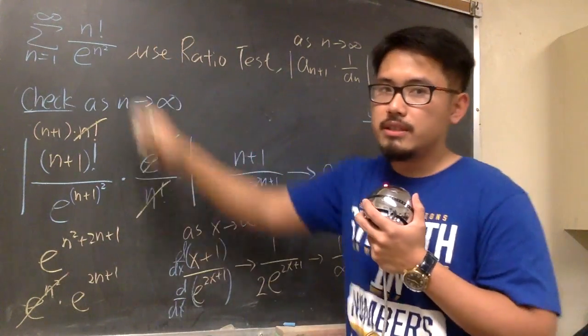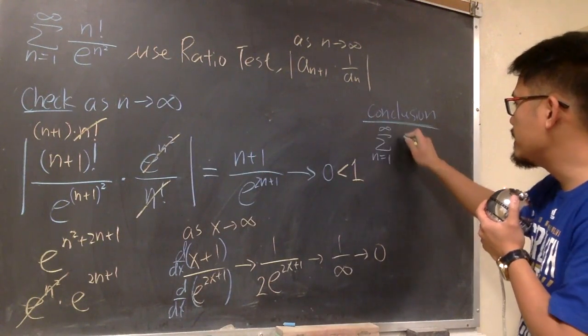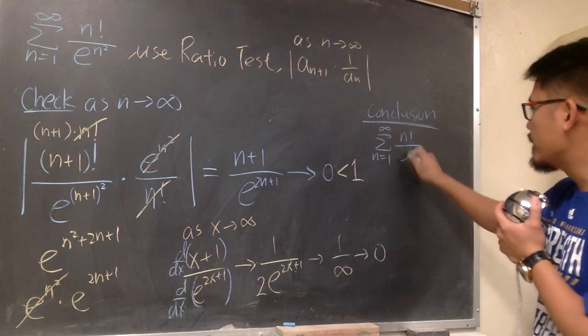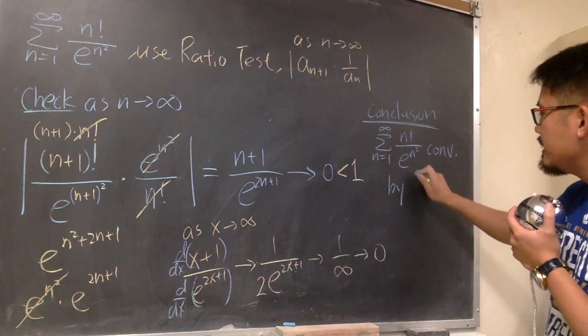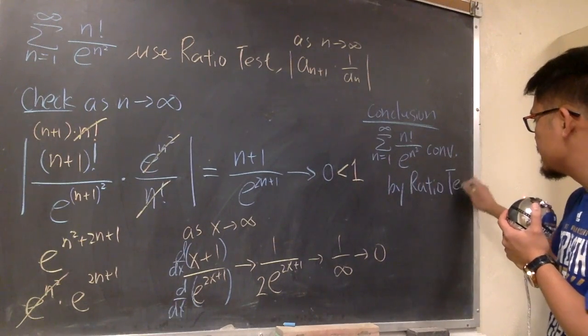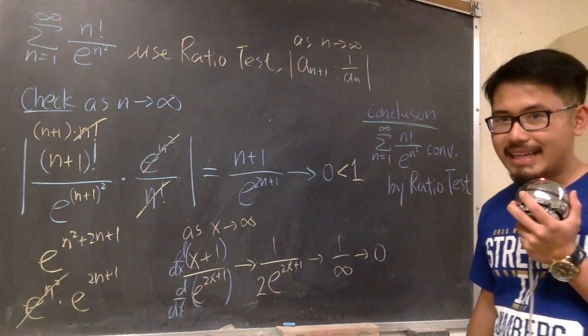The original series, so let me write it down, sigma n goes from 1 to infinity, n factorial over e to the n², this right here, converges by the ratio test. That's it.